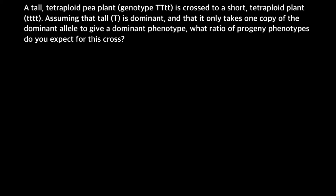Assuming that tall capital T is dominant and that it only takes one copy of the dominant allele to give a dominant phenotype, what ratio of the progeny phenotypes do you expect for this cross? As usual, I recommend you stop the video here, try to solve this problem on your own first, and when you are ready you can run the video again.